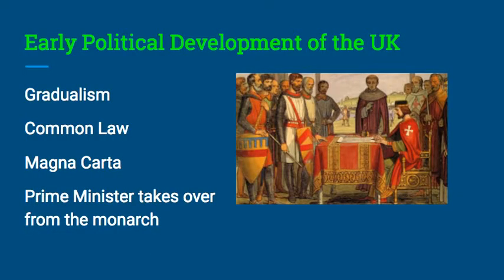Let's start with the early political development of the United Kingdom. It's important to understand the term gradualism — a key term used to describe the historical development of the British Parliament and their democracy. The United Kingdom developed a democratic system gradually because of its geographic isolation from the rest of Europe, with a slow process of removing power from the monarchy and giving power to elected officials.